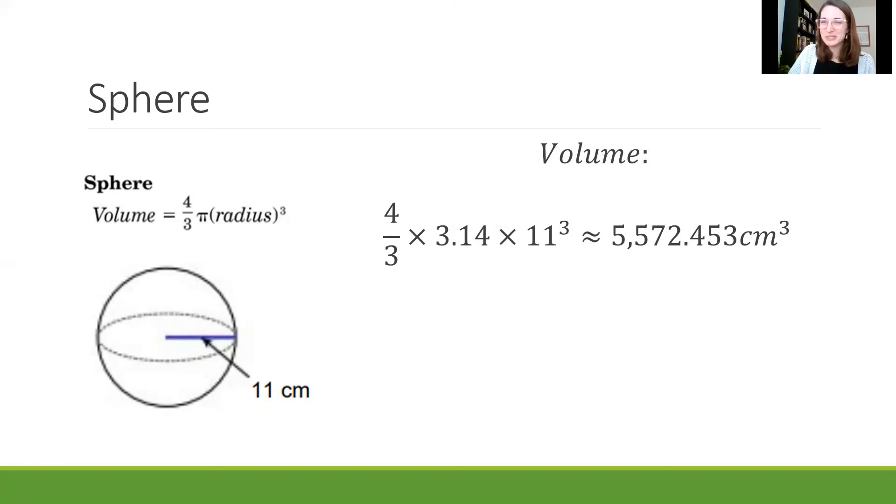Now for our final example today we have a sphere. The sphere says volume equals four thirds π times radius cubed. So we're going to plug all this information in, we have four thirds which we keep the same, π which we know is represented by 3.14, and we're going to multiply both of those things together with also the radius which we see here is 11, the distance from the middle of the sphere or circle all the way out to the edge, and we have 11 cubed.